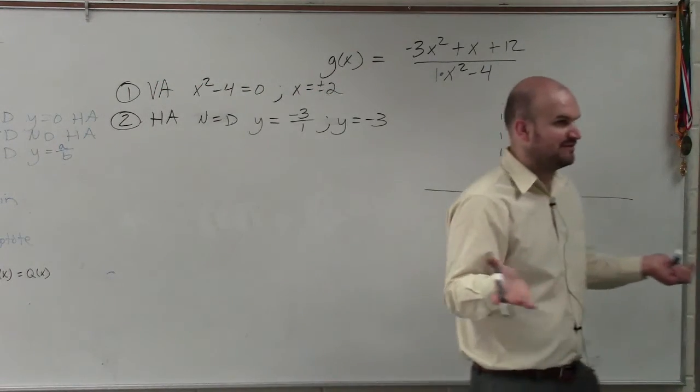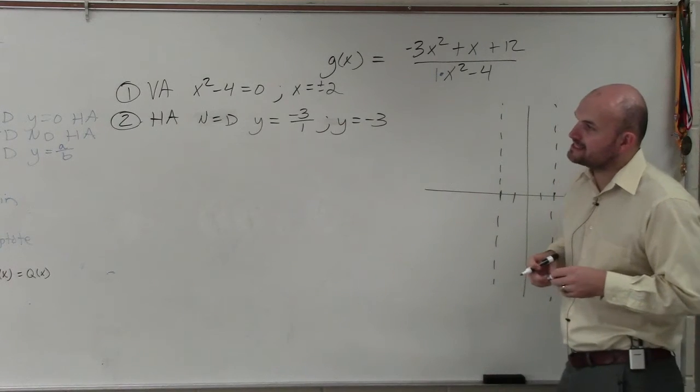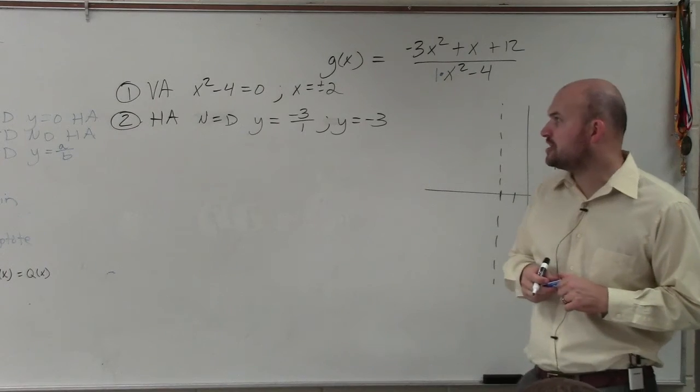Does everybody follow me? Anybody have any questions? Then, the next thing is I don't need to do 2a, because that's for slant asymptotes. For number 3, I need to check for symmetry.